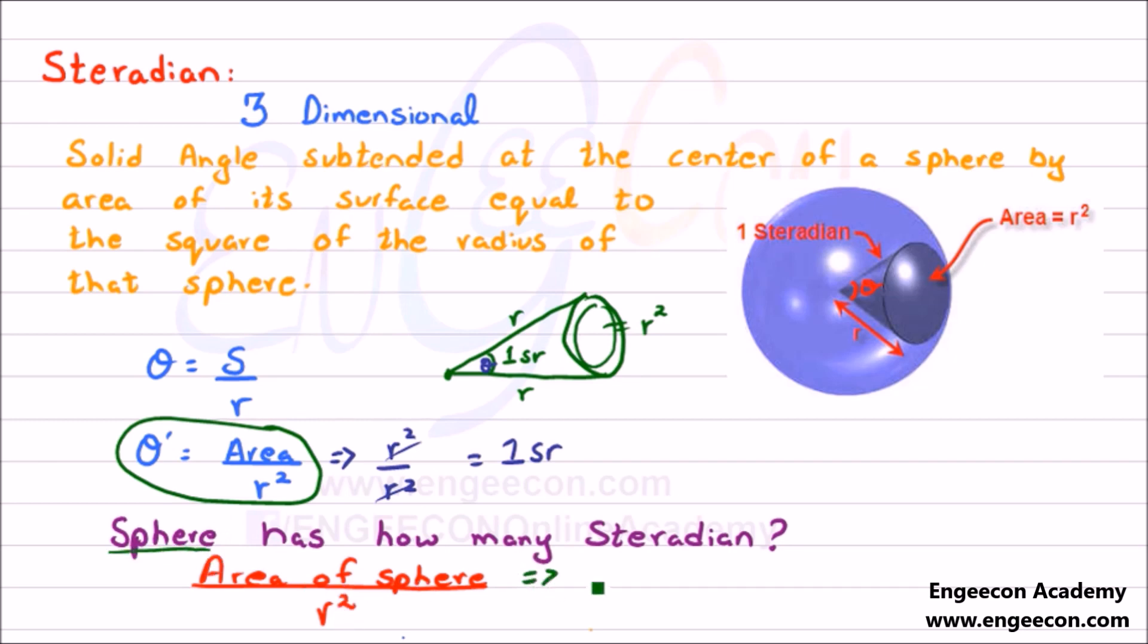We know that the area of the sphere is equal to 4πr² divided by r². This r² will cancel out and we're left with 4π steradian.